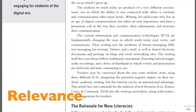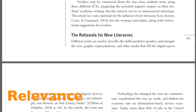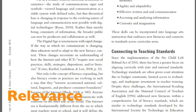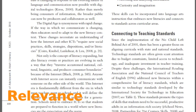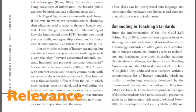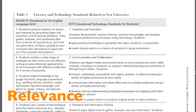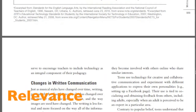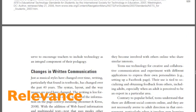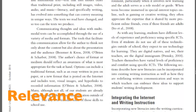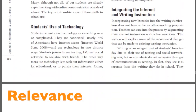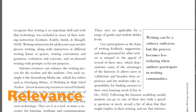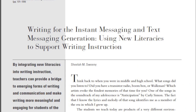Relevance is a very important criteria because if an article isn't relevant to your topic, it won't fit into your paper. Skim the headings and introduction or conclusion section of an article to see the main ideas. Also take a look at the language the author uses. This can help you determine if the article is at an appropriate level for your needs. In our article, the author does not use language that is too technical or complex, so it seems to be appropriate for a college-level research paper on texting and literacy.